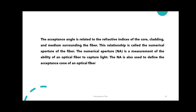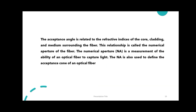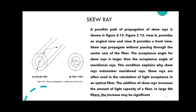The acceptance angle is related to the refractive indexes of the core, cladding, and the medium surrounding the fiber. This relationship is called the numerical aperture of the fiber, and it is a measure of the ability of the optical fiber to capture light. N1 is also used to define the acceptance cone. If the ray is propagated without passing through the center axis, the figure is still propagated — these are skew rays.